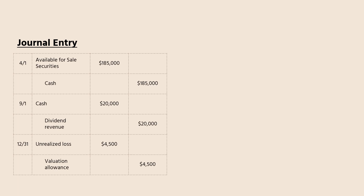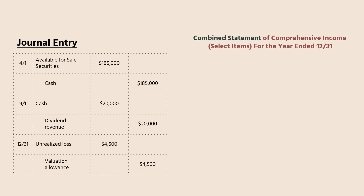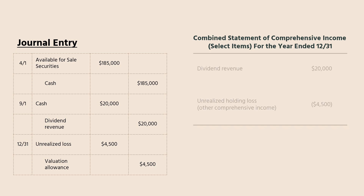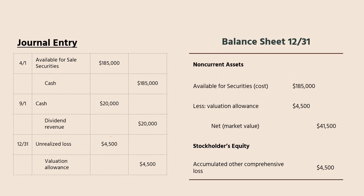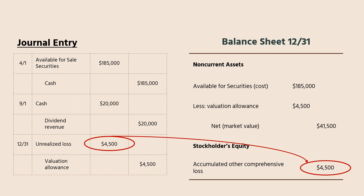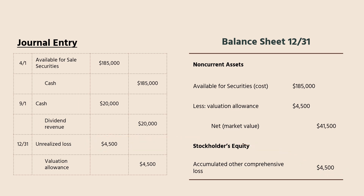The unrealized loss on available for sale securities in the period is disclosed in the statement of comprehensive income. As you can see, the unrealized holding loss is written as other comprehensive income. In the balance sheet, the $4,500 unrealized loss is shown in the stockholders' equity section as accumulated other comprehensive loss, while the $4,500 valuation allowance along with the $185,000 available for sale securities is shown in the assets section.